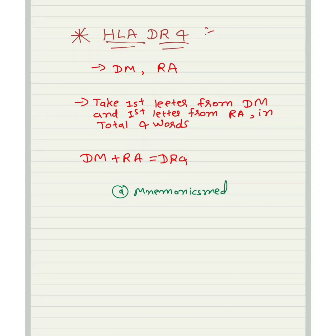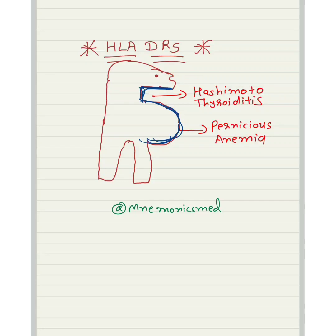Now we will learn about HLA-DR5. You can make a cartoon — from the neck you can remember Hashimoto's thyroiditis, and from the abdomen you can remember Pernicious anemia. So you can make a cartoon and easily remember HLA-DR5 subtype.